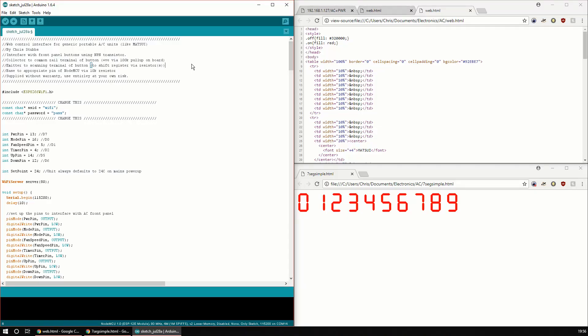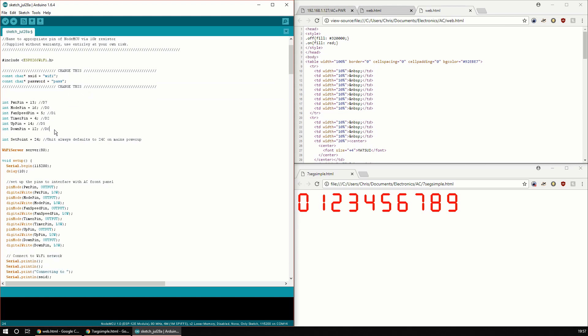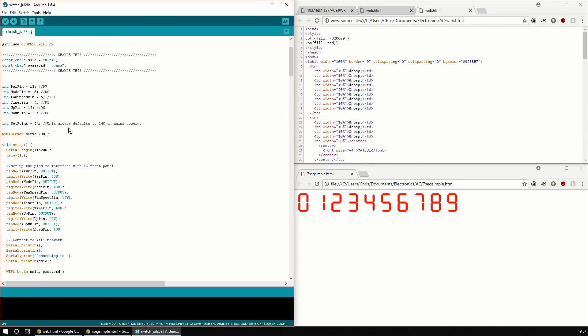The NodeMCU board is programmed by the Arduino IDE in this case. I'll stick a link in the description for some instructions on how to get the basics set up. I'll take you for a quick walk through the code. You set your SSID and password for the Wi-Fi. Here we set up the pin numbers for all of the different pins that get used. I don't actually use the fan speed and the timer pin or the mode pin. We're just doing power up and down pins.